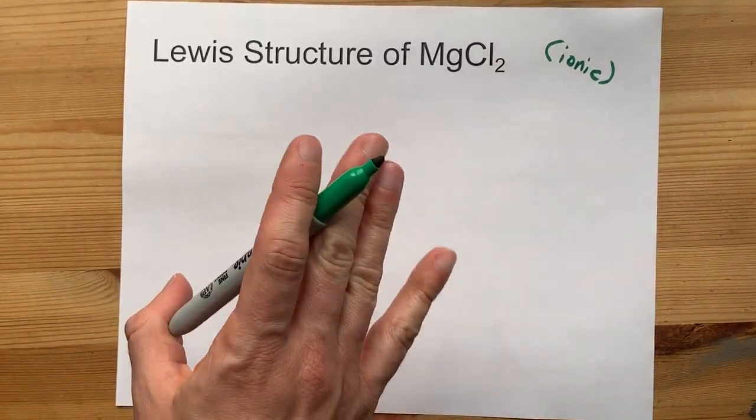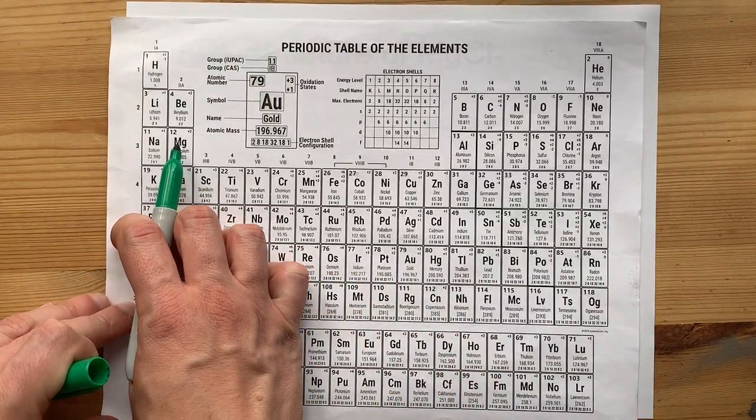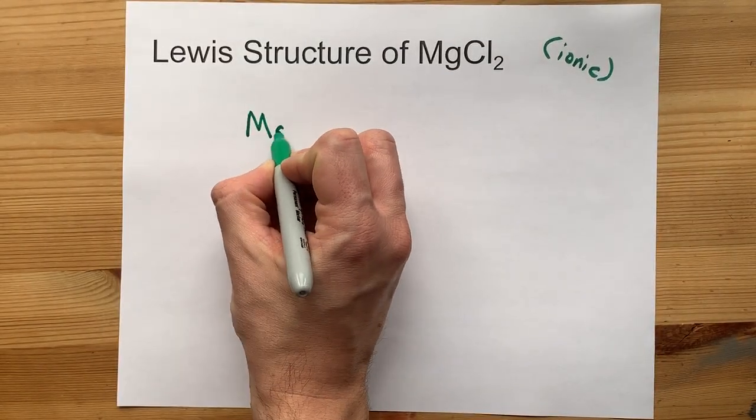The metals want to give its electrons away to the non-metals. Now, magnesium is in group 2. That means it brings 2 valence electrons with it.